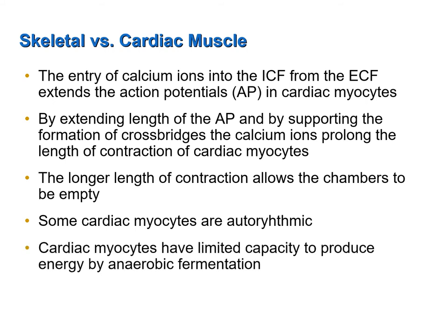Another difference between cardiac myocytes and skeletal muscle fibers is their capacity to produce energy by anaerobic fermentation. Most energy produced in a skeletal muscle fiber comes from aerobic respiration, but a percentage does come from anaerobic respiration as well. Cardiac myocytes are much more dependent on aerobic respiration than skeletal muscle fibers — they really don't have much of an enzyme system that can produce ATP through anaerobic fermentation. That is why a loss of blood flow and oxygen to any part of the heart can have such a devastating effect on cardiac muscle tissue, since they simply cannot produce much ATP from mechanisms other than aerobic respiration.